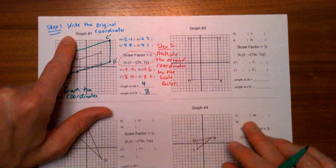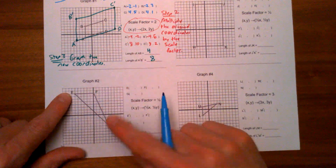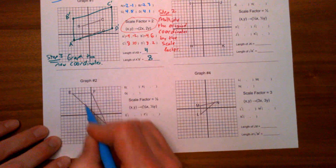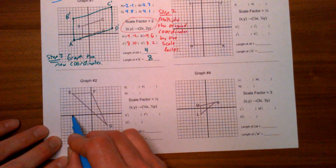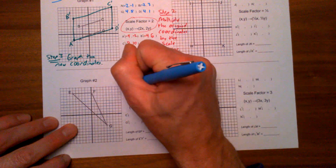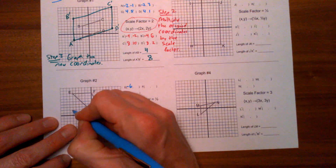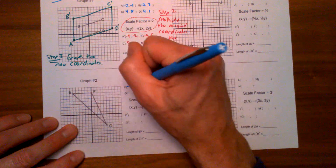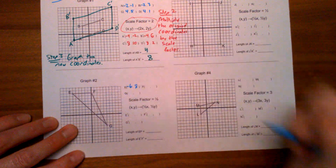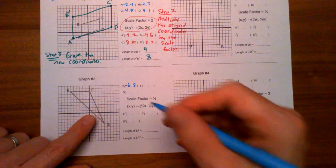Let's do graph two together. Step one: write the original coordinates. There are points E, F, and G. From the origin to get to E: six to the left and up eight, so E is at (-6, 8). What are the coordinates of point F?